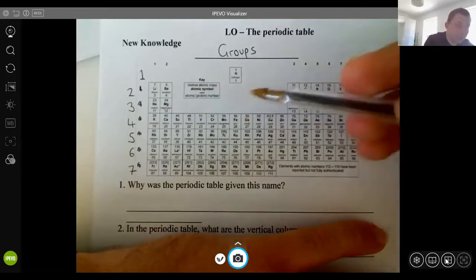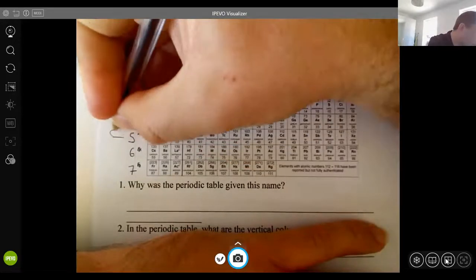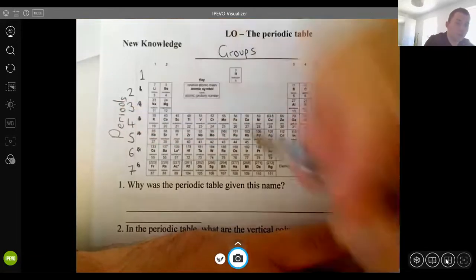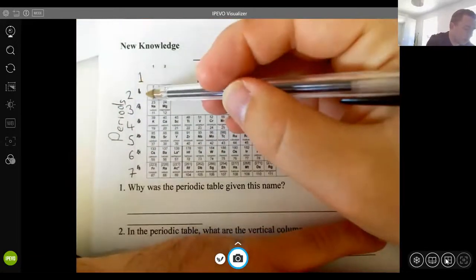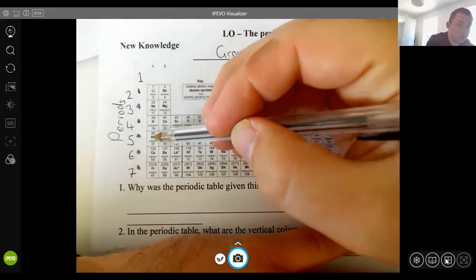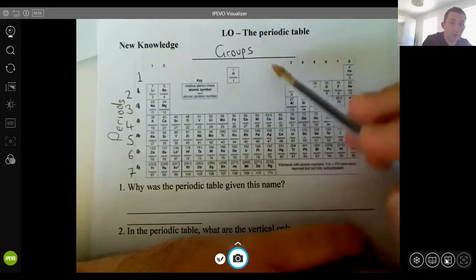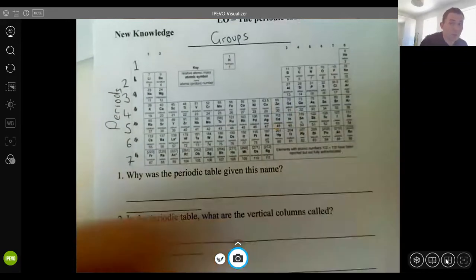Along the side, we've got these numbers here. These are called the periods. So you've got period one, period two, period three, period four, period five, period six, period seven. So these two numbers, these two terms, will come up in a second.